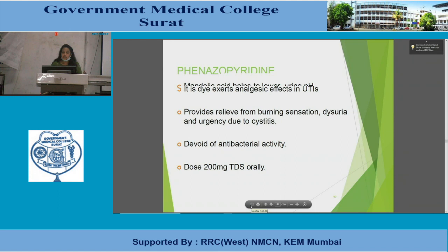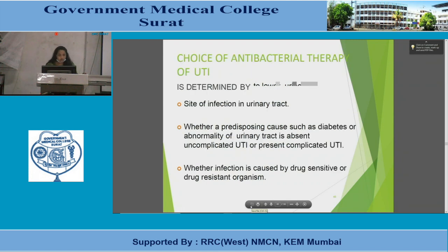Phenazopyridine is a dye that exerts an analgesic effect in UTIs, providing relief from burning sensation, dysuria, and urgency due to cystitis. It is devoid of antibacterial activity and is suitable only for symptomatic relief. The recommended dose is 200 mg three times a day orally.